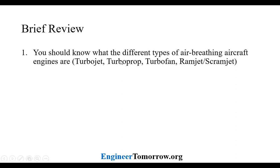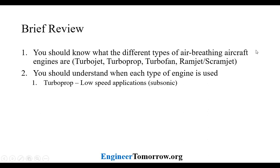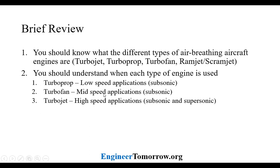As a brief review, you should know the different types of air-breathing aircraft engines: the turbojet, turboprop, turbofan, and the ramjet/scramjet. You should also understand when each type is used. Turboprops are used for typically low-speed applications because of the propeller tips — you don't want those to go supersonic and introduce losses, so they're generally used for subsonic applications. The turbofan is much like the turboprop except without a reduction gearbox — although Pratt & Whitney may introduce that gearbox. Turbofans are typically used for mid-speed applications around Mach 0.8, which is around the current speeds that aircraft fly at today because it's most efficient. Those are generally subsonic as well, although you can have a supersonic turbofan, it's not as efficient.